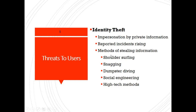Shoulder surfing happens when the thief observes the information the victim fills out on a form, enters on a keypad, or provides as a credit card number or telephone number. Phishing is another technique — identity theft through phishing occurs when hackers use email to trick people into offering up their personal information. Phishing emails may contain attachments designed to steal personal data, or links to fraudulent websites where people are prompted to enter their information.